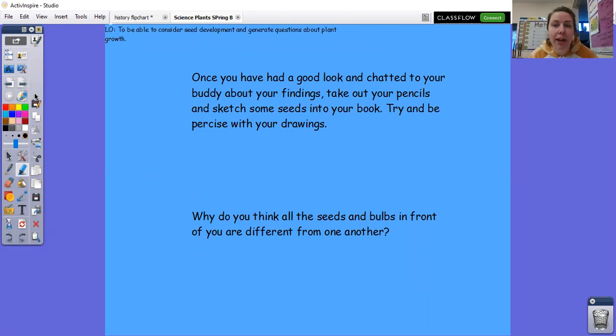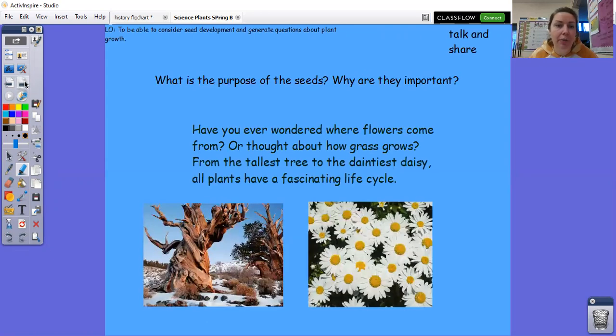Well done guys. Now once you've had a good look and chatted with your buddy about the findings, please take out your pencils and sketch some of those seeds into your either on a piece of paper or in your sketchbooks or anything that you've got at home for your home learning. And try to be really precise with your drawing. So if you have got a little bit of fuzziness on your seed for example, make sure you try and relay that onto your picture as well. And then I want you to think about it. Why are those seeds and bulbs in front of you different from one another? What purpose do they serve? Let's find out more.